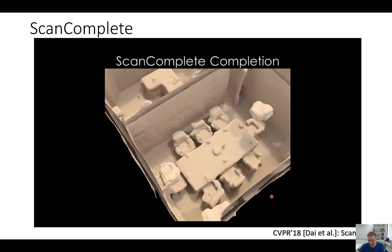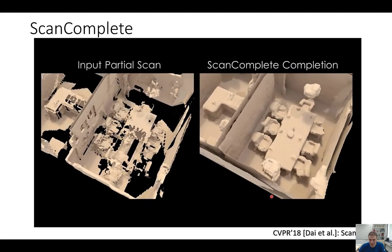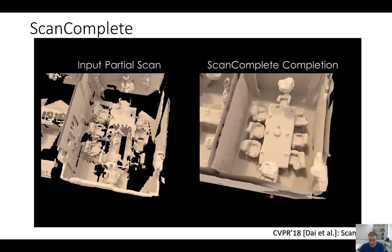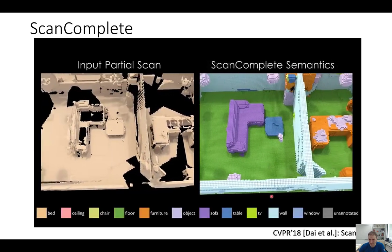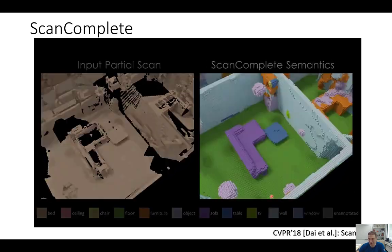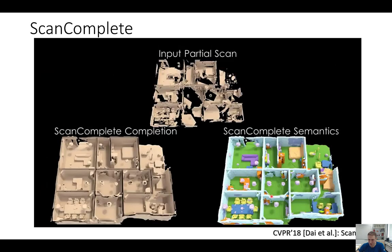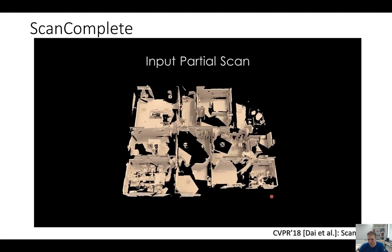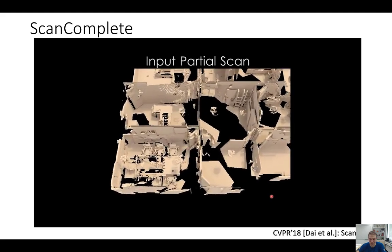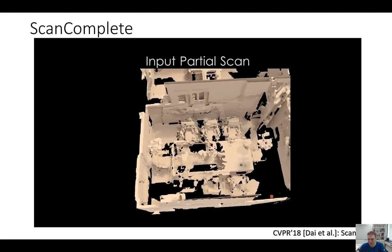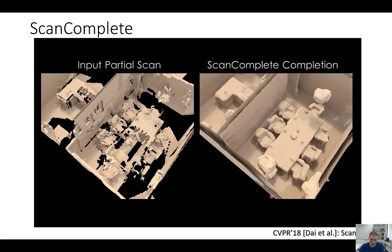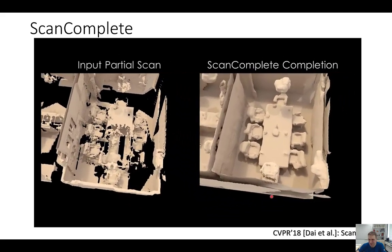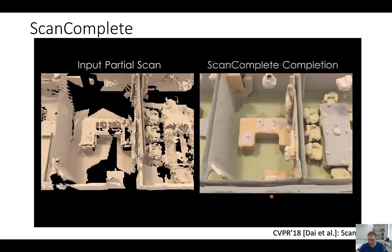One reason we predicted semantics was we thought it might help our completion. We tried hard to show that, but it didn't help much — maybe a little bit, but only barely. What turned out to be true is that the completion helped the semantics quite a bit. If you have a completion output, that makes the semantics a lot better. So if you're thinking about self-supervised representation learning, completion is a pretty good proxy task and helps the semantic features.